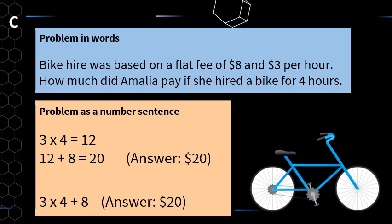For example: bike hire was based on a flat fee of $8 — a one-off fee — and $3 per hour. How much did Amalia pay if she hired a bike for four hours? We know that the $8 has nothing to do with the hourly fee, so I want to make sure I multiply the $3 by 4 to get 12, and then add the 8.